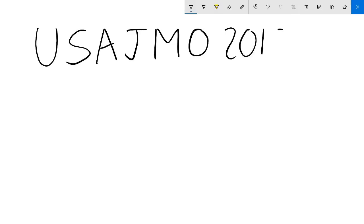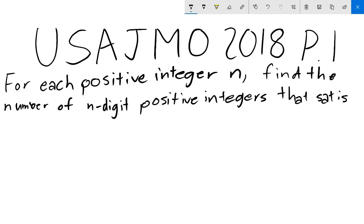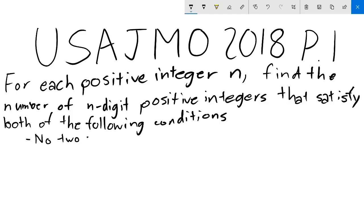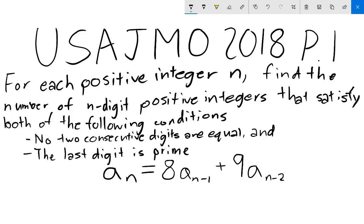Before ending, here's a problem to try. This technique was part of USAJMO 2018, Problem 1. The problem asks: for each positive integer n, find the number of n-digit positive integers where no two consecutive digits are equal, and the last digit is prime. This boils down to finding a function satisfying a(n) equals 8·a(n−1) plus 9·a(n−2), with initial conditions a(1) equals 4 and a(2) equals 32. See if you can figure out the function that fits this.